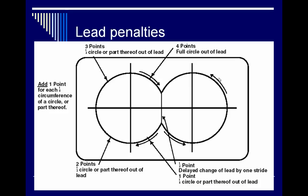For lead change penalties: the lead change is always supposed to happen at the center. There's a small box where they can complete the change. If it's delayed by one stride, that's a half-point penalty. A one-point penalty is assessed for each quarter circle they remain out of lead. So if they're still out of lead in the next quarter, that's a cumulative two points, then three, then four. If a rider goes two full circles in the incorrect lead, the total would be eight penalty points.